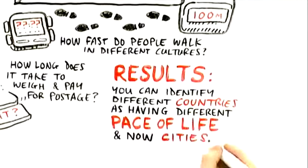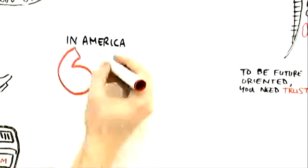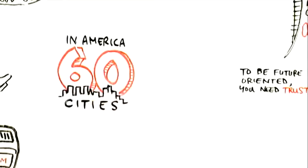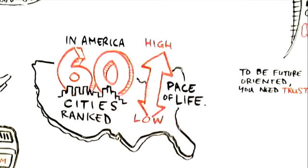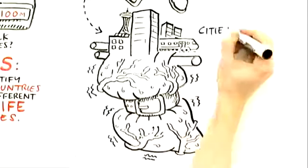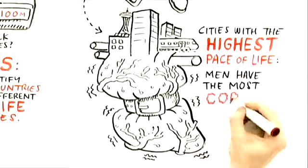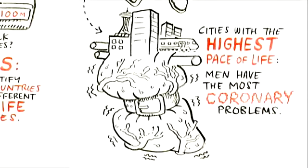So he has a bunch of these measures. And it turns out you can identify cultures as different pace of life, and now cities. And he shows in America you can rank 60 cities according to high pace of life and low pace of life. And the ones that have the highest pace of life, men have the most coronary problems. This becomes part of your whole way of life.